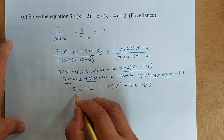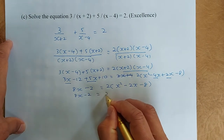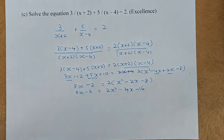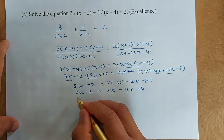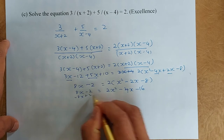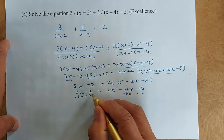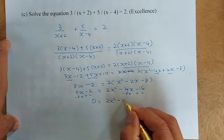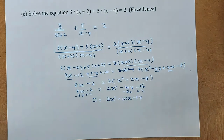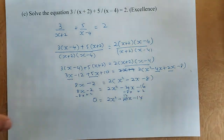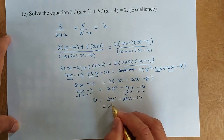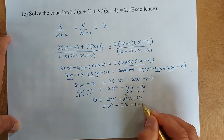Expanding the right hand side: 8x minus 2 equals 2x squared minus 4x minus 16. We want to make it equal to 0, so we subtract 8x and add 2 on both sides. This gives 0 equals 2x squared minus 12x minus 14. So the equation is 2x squared minus 12x minus 14 equals 0.